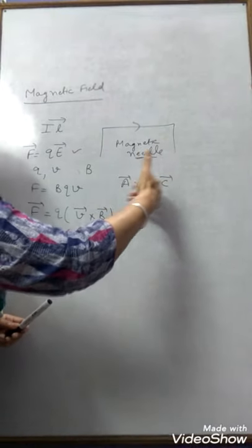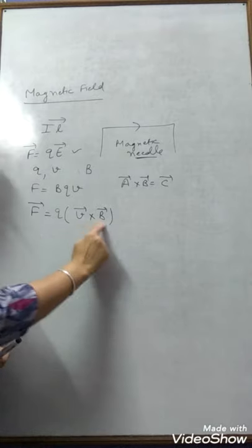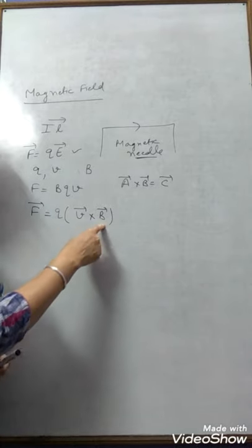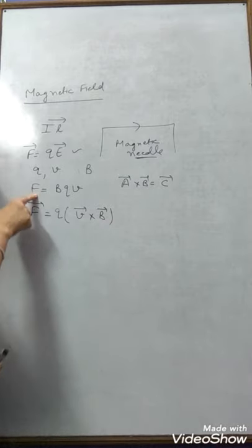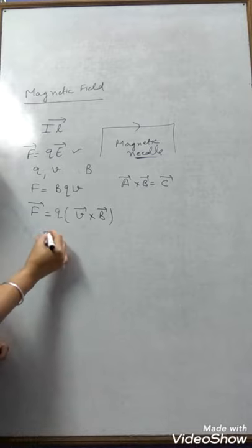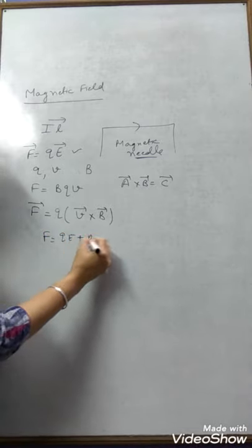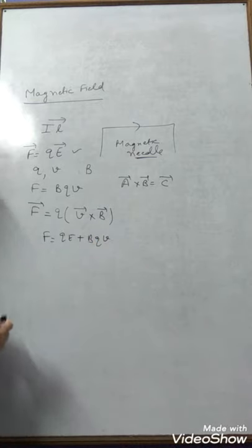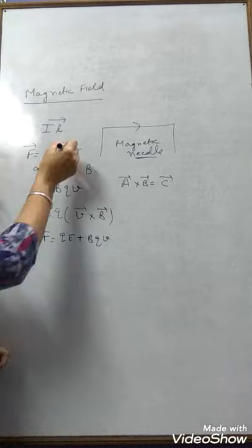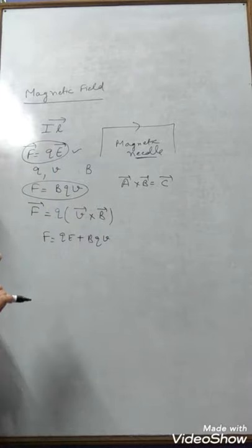This force vector F is perpendicular to the plane of V vector and B vector. This is the magnetic Lorentz force. Where both fields are present, the total is called the Lorentz force. Keep in mind that a charge in an electric field experiences a force, and a charge in a magnetic field also experiences a force.